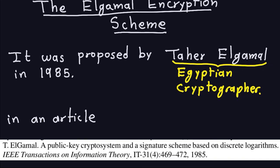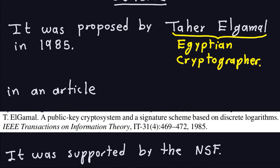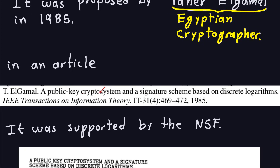Let's start with a little bit of history. It was proposed by Taher ElGamal, who was an Egyptian cryptographer. At the time he was working at the Hewlett-Packard lab at Stanford University when he wrote an article about the ElGamal encryption scheme. That article was called "A Public Key Cryptosystem and a Signature Scheme Based on the Discrete Logarithms." The discrete logarithms are related to the Diffie-Hellman key exchange and also to the ElGamal scheme.